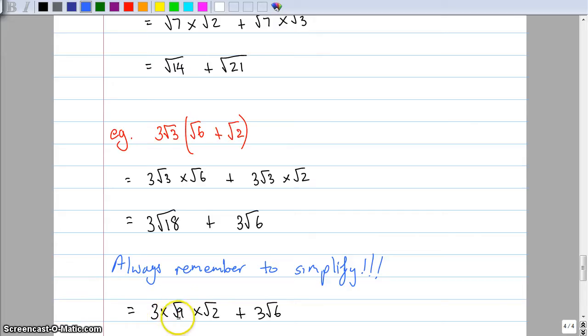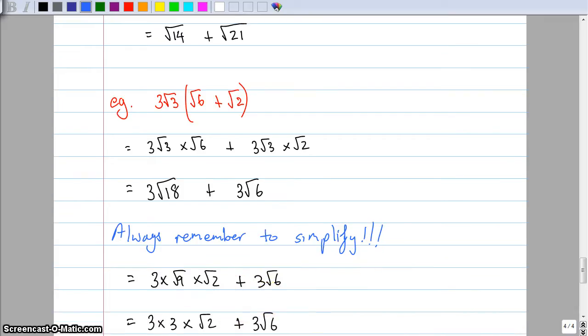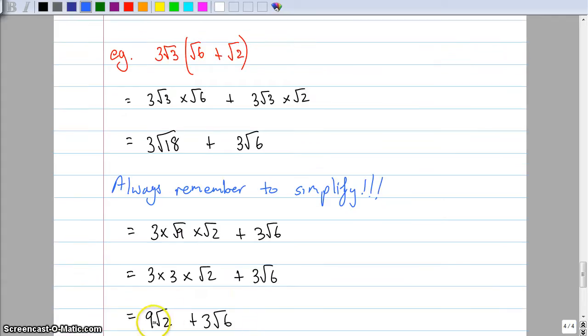It's three root nine times root two, because root nine times root two is root eighteen, plus that three root six we can't simplify that one any further. So that becomes three times the square root of nine, which is three, times root two plus three root six, which ends up being nine root two plus three root six.